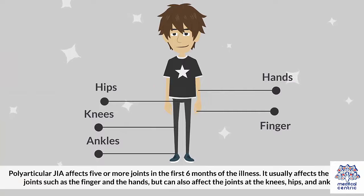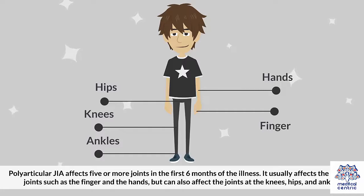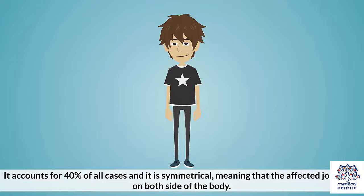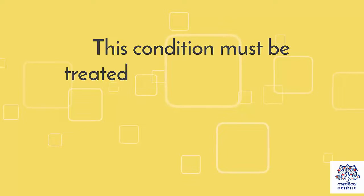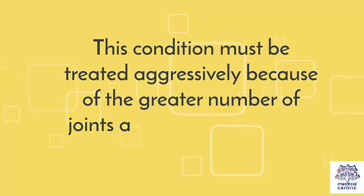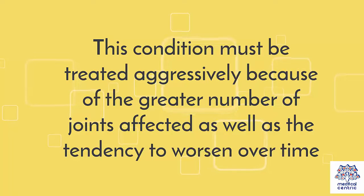Polyarticular JIA affects five or more joints in the first six months of the illness. It usually affects the smaller joints such as the fingers and hands, but can also affect the joints at the knees, hips, and ankles. It accounts for 40% of all cases, and it is symmetrical, meaning that the affected joints are on both sides of the body. This condition must be treated aggressively because of the greater number of joints affected, as well as the tendency to worsen over time.